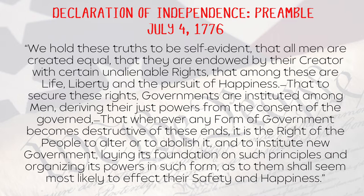The preamble to the Declaration of Independence contains the entire theory of American government in a single inspiring passage: 'We hold these truths to be self-evident, that all men are created equal, that they are endowed by their creator with certain unalienable rights, that among these are life, liberty, and pursuit of happiness, that to secure these rights, governments are instituted among men, deriving their just powers from the consent of the governed, that whenever any form of government becomes destructive of these ends, it is the right of the people to alter or to abolish it, and to institute new government, laying its foundation on such principles and organizing its powers in such form, as to them shall seem most likely to affect their safety and happiness.'